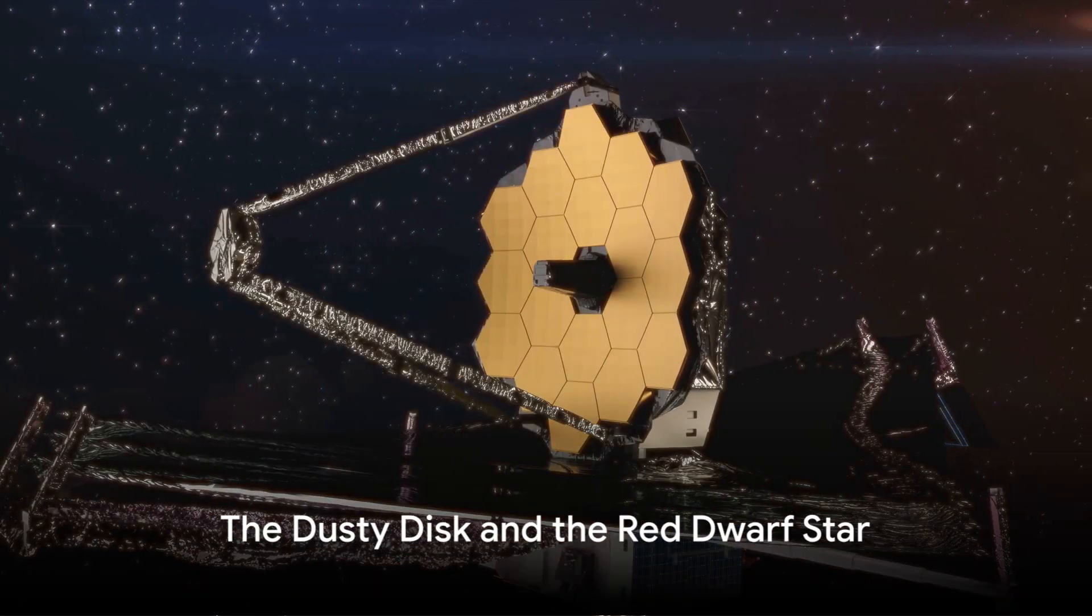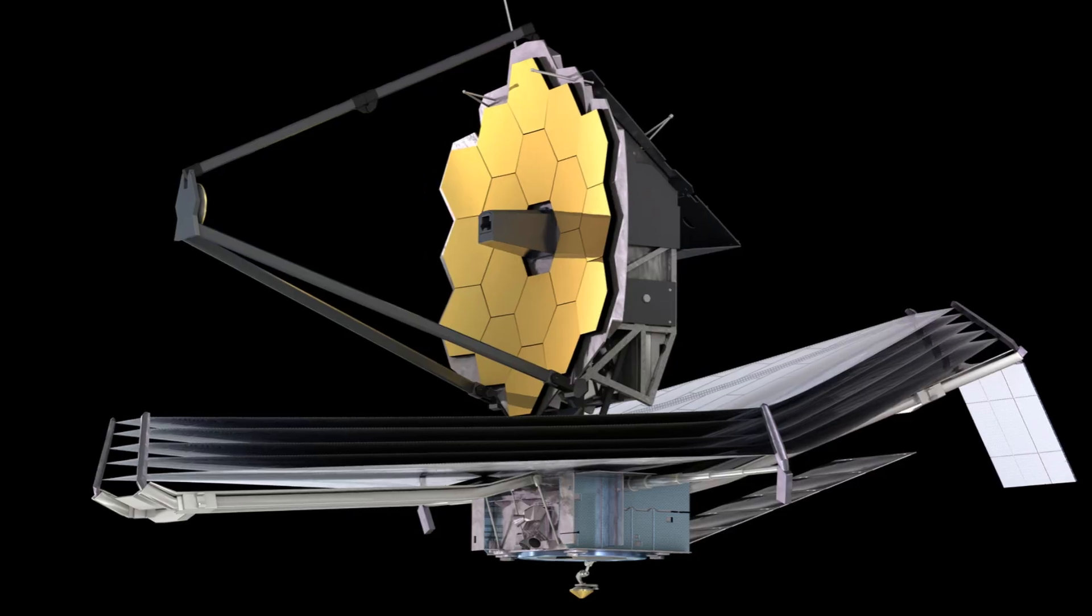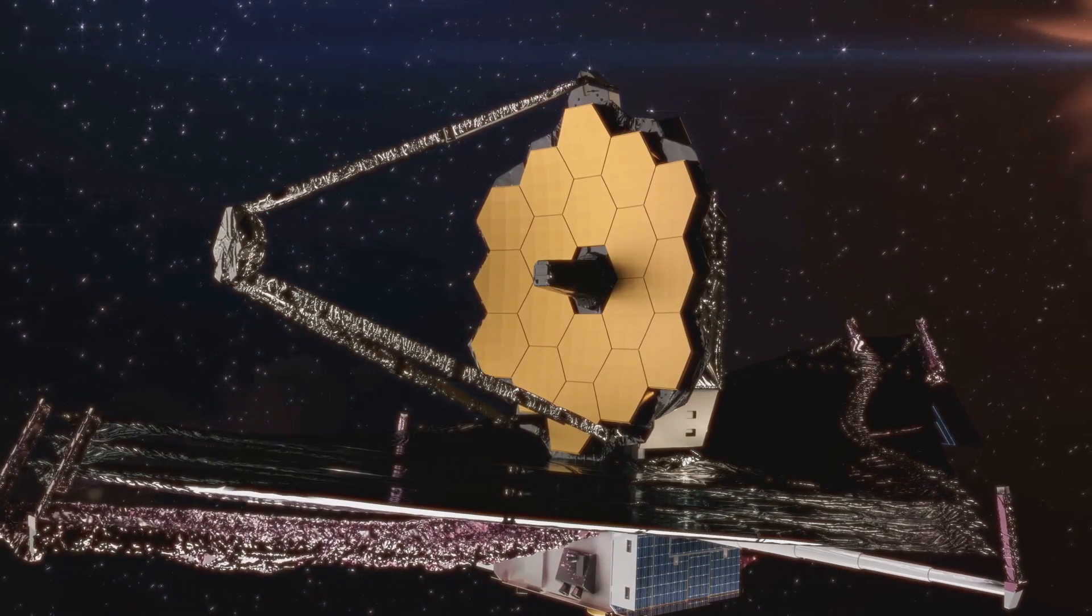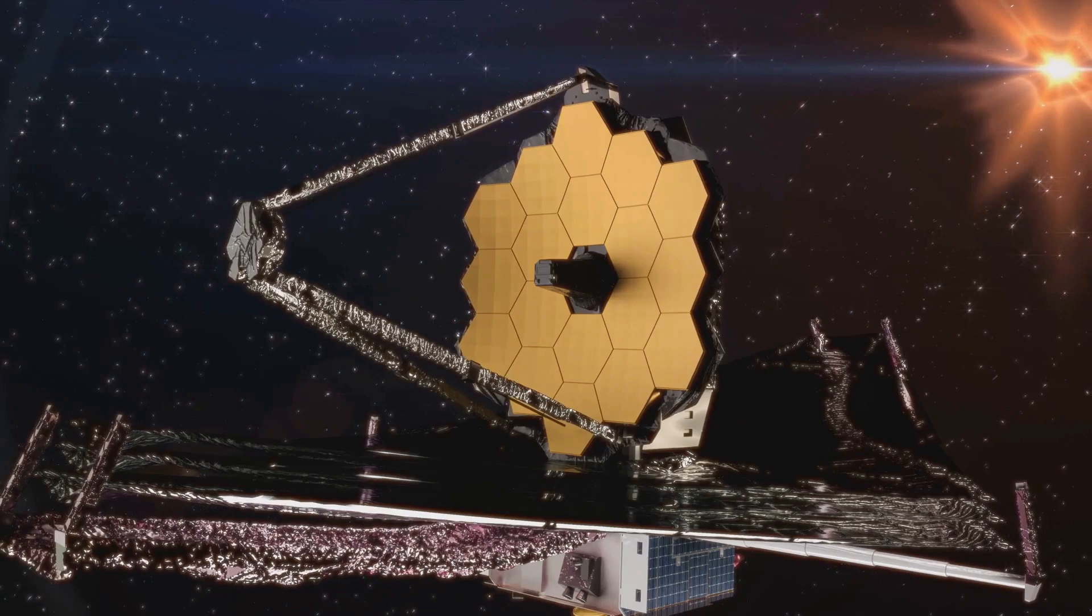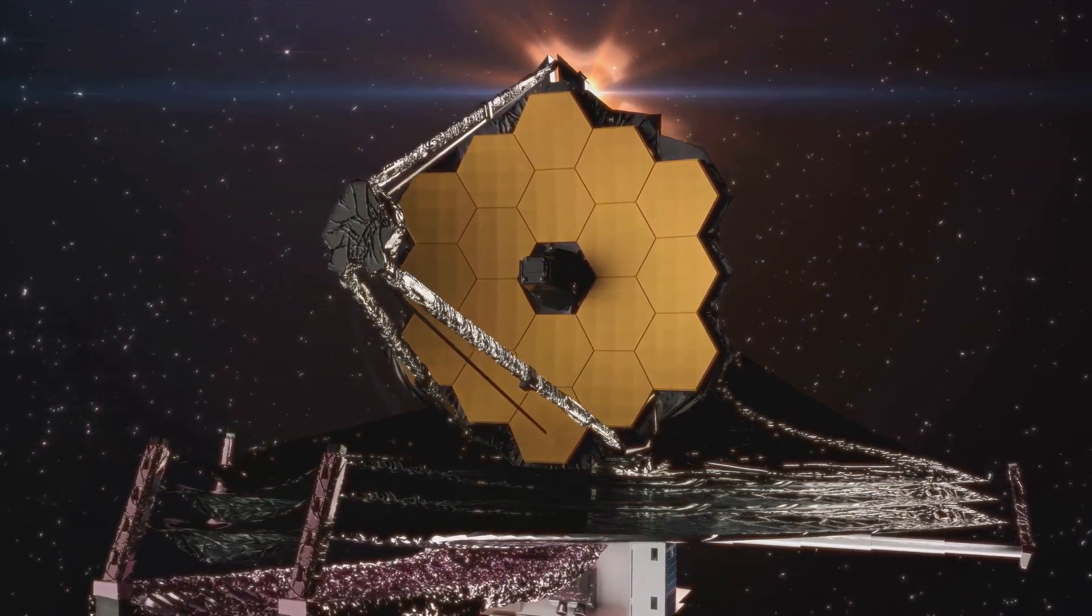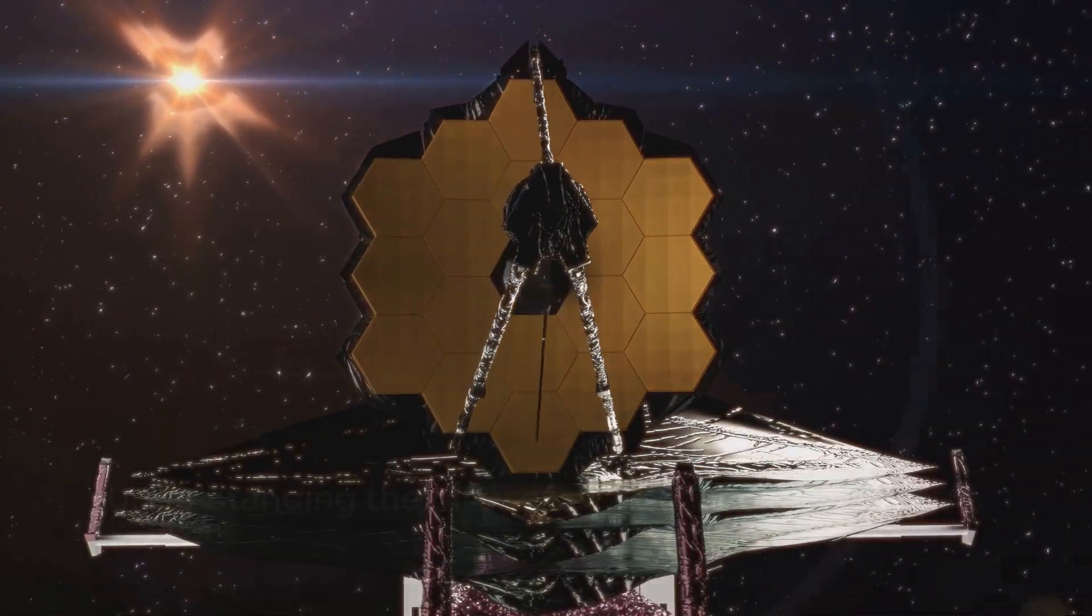But the telescope didn't stop there. It soon turned its gaze to a red dwarf star. As the James Webb Space Telescope journeyed further into the cosmos, it captured images of a dusty disk encircling a red dwarf star. Now you might be wondering, why is this so important? Well, the answer lies in understanding the birth of planets and star systems.